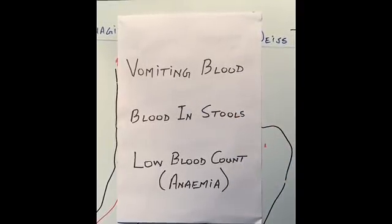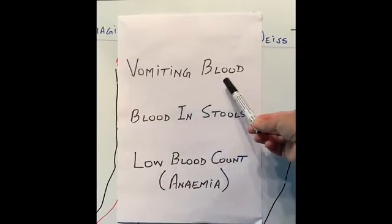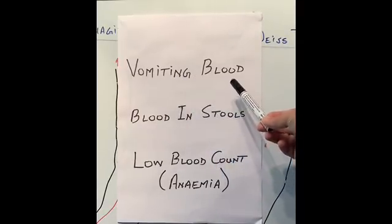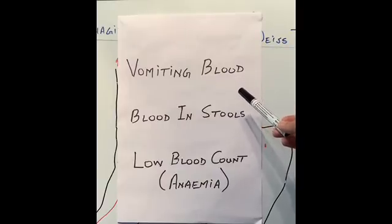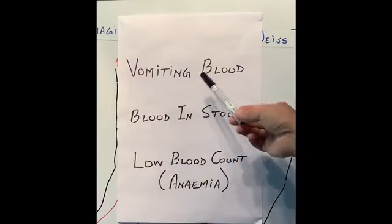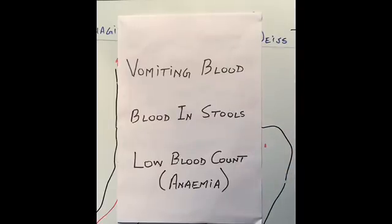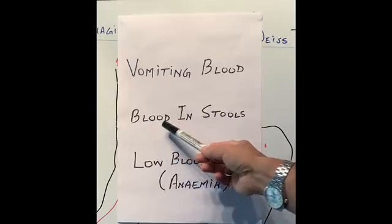The first and foremost is vomiting blood. If you are bleeding from the top end of the digestive system — the esophagus, the stomach, or the very upper part of the small intestine — the blood will predominantly come out the top end, because there is less gut above the bleeding than below it. Eventually, if blood stays in the bowels long enough, we will also get blood in the stools.